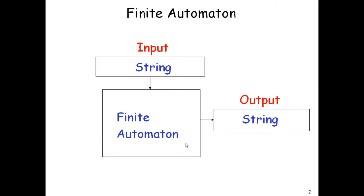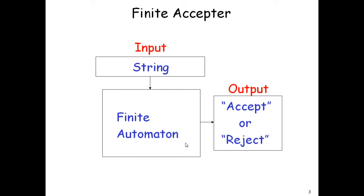So what actually finite automata is - when you look at this diagram, finite automata can be represented as taking an input string, processing that string and outputting a string. But when we want to represent this as a finite acceptor, the output changes. Here we can say that a finite automata takes an input string, and after processing that string, the finite automata can output whether the string is accepted or rejected.